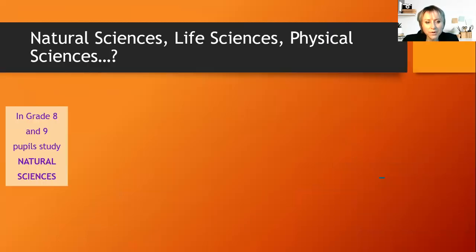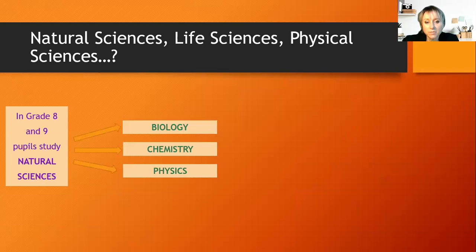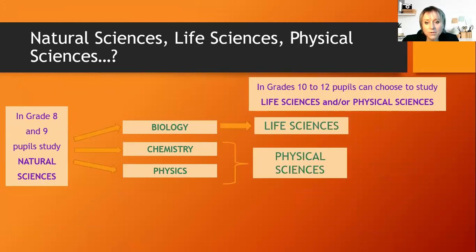As you all know, in grade eight and nine people study natural sciences, and you will all know that you've studied biology, chemistry and physics as part of natural sciences — all three. So now in grade 10 you would either choose life sciences or physical sciences. If you're interested in the biological part of natural sciences then you would pick life sciences, but if you want to continue with chemistry and physics you would then pick physical sciences.